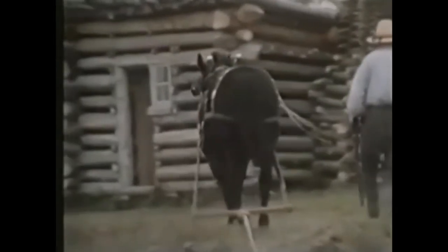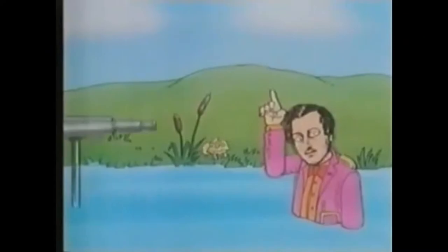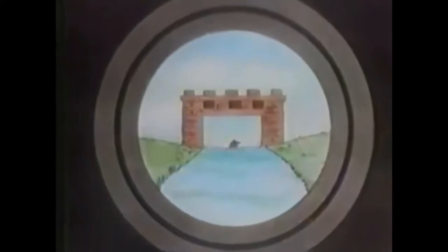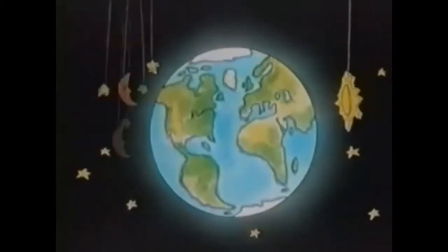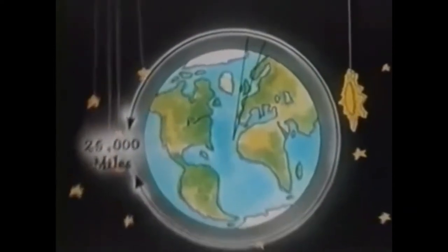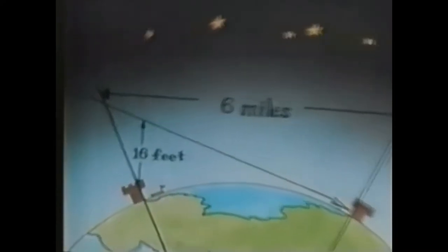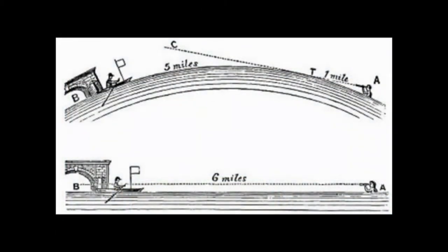Samuel Rowbotham wrote: 'A boat with a flagstaff, the top of the flag five feet above the surface of the water, was directed to sail from a place called Welch's Dam, a well-known ferry passage, to another called Welney Bridge. These two points are six statute miles apart. The author, with a good telescope, went into the water, and with the eye about eight inches above the surface, observed the receding boat during the whole period required to sail to Welney Bridge. The flag and the boat were distinctly visible throughout the whole distance. The experiment commenced about three o'clock in the afternoon of a summer's day, and the sun was shining brightly and nearly behind or against the boat during the whole of its passage. Every necessary condition had been fulfilled, and the result was to the last degree definite and satisfactory. The conclusion was unavoidable: the surface of the water for a length of six miles did not, to any appreciable extent, decline or curvate downwards from the line of sight.'